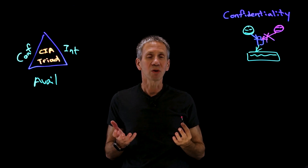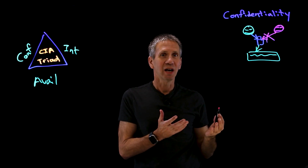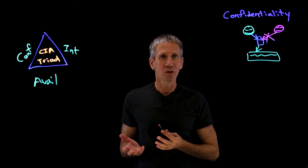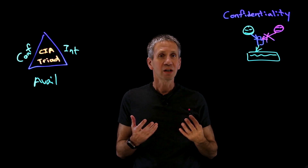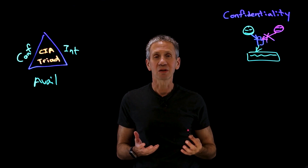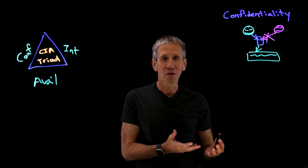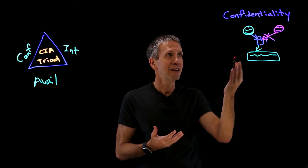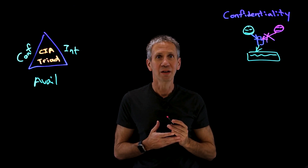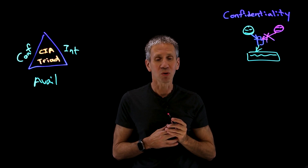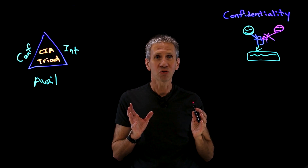A lot of times in the literature, confidentiality is referred to as the same as privacy. But that's based on an older notion of what privacy is. Now we have a more modern notion that says confidentiality really involves more things like notice and consent, and the right to be forgotten. That's not really covered in this overall notion of confidentiality, but it is still very important. So confidentiality — the first of the CIA triad.